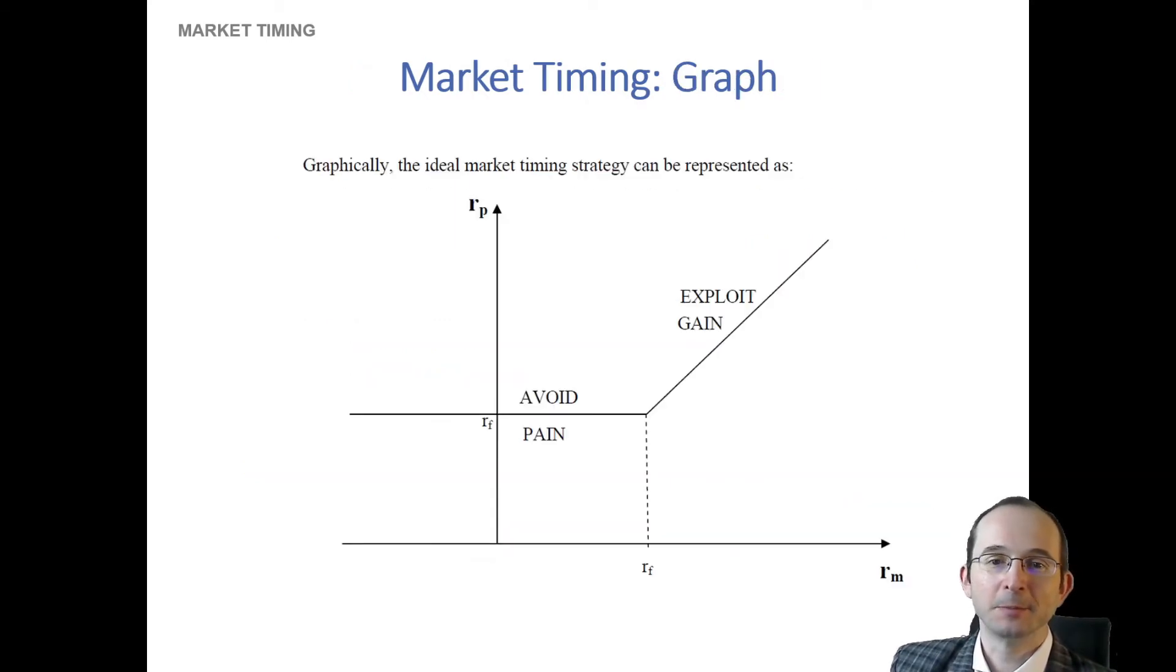So the ideal market timing strategy would sort of look like that. If the market return were above the risk-free rate, you would hold it, and if the market return were below the risk-free rate, where the market returns fall on the horizontal axis and the portfolio returns under hypothetical market timing fall on vertical, then if the market were to underperform the risk-free rate, you just go to the risk-free asset and earn that. In other words, you'd avoid the pain of market losses.